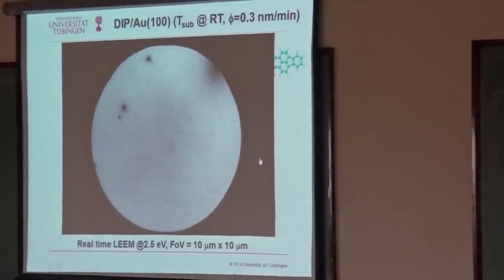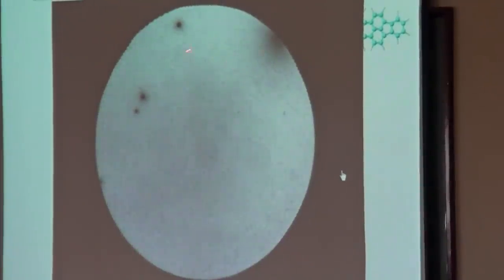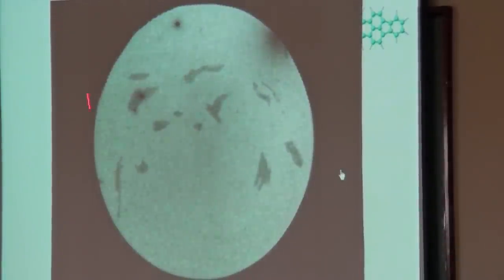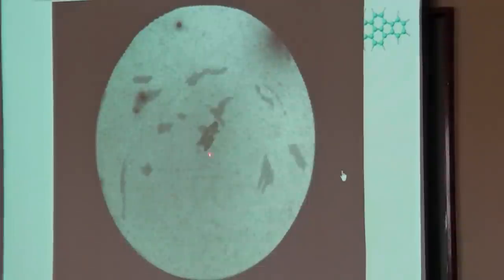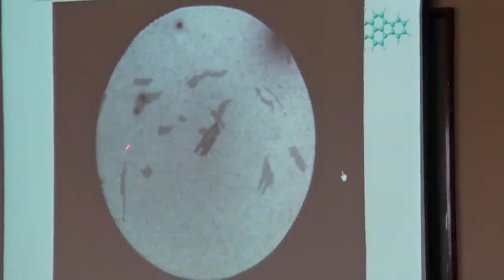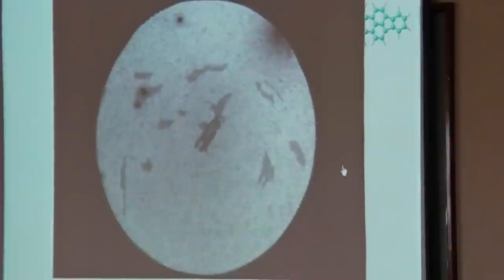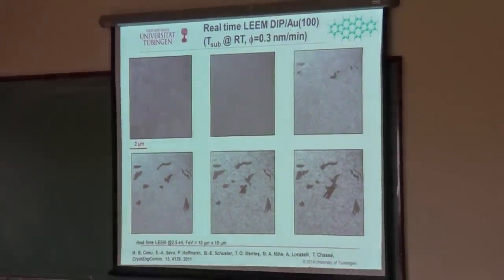We put the evaporator inside and looked with the microscope meanwhile. You see very slow changes in contrast, then big differences in contrast — those are islands. We watched in real time how these molecules generate islands and how they grow. We have very large islands and very small islands. We evaporated for two hours under these conditions, and I compressed it into 45 seconds.